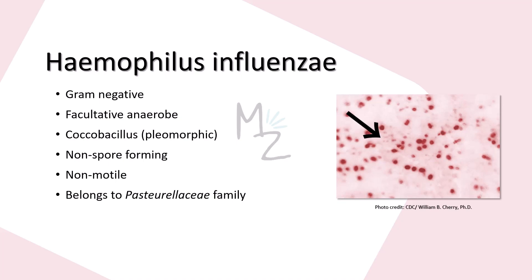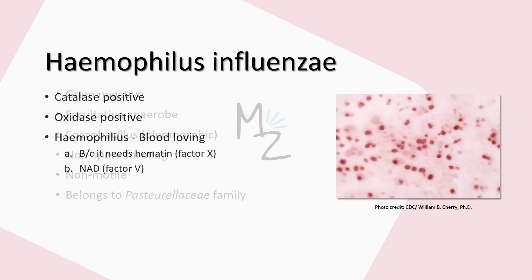You can see Haemophilus influenzae in this picture. Haemophilus influenzae is catalase positive. If you do not know what catalase is, it's an enzyme released by certain bacteria that converts hydrogen peroxide into water and oxygen, and then oxygen is responsible for forming bubbles. Haemophilus influenzae is one of those bacteria that releases catalase, converting hydrogen peroxide into water and oxygen. That's why it is catalase positive — we confirm this with catalase tests.